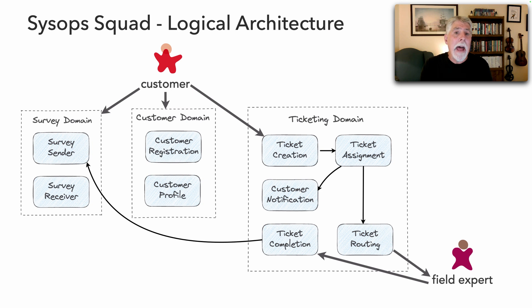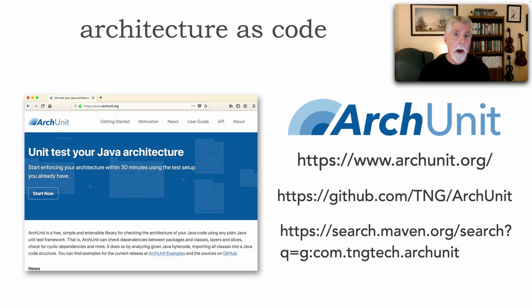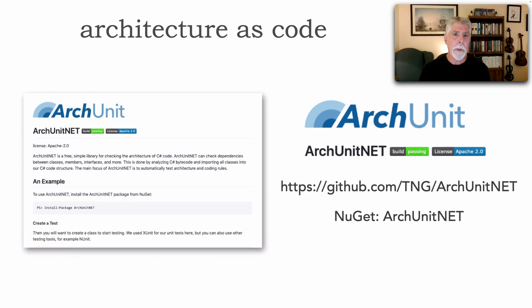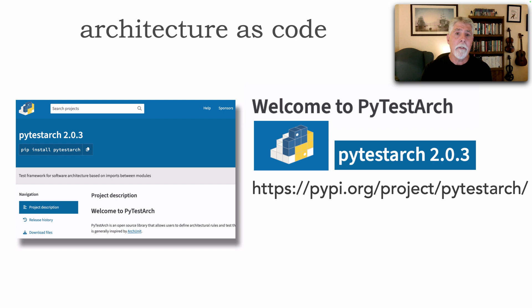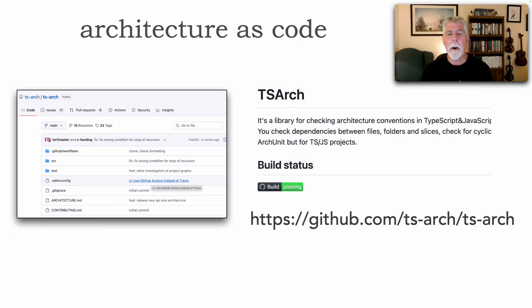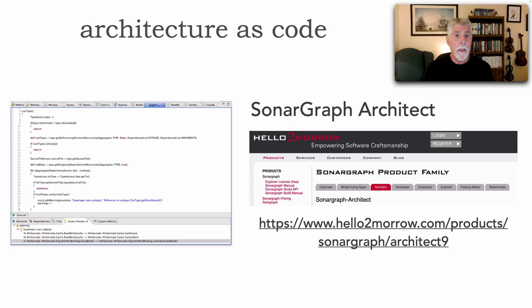When we talk about architecture as code, let me show you one possible definition and a couple of tools we can actually use. The first couple are free. The first is ArcUnit in the Java ecosystem, which allows you to represent your architecture as executable code. In the .NET platform we have ArcUnit.NET and also NetArk Test. In Python we have PyTestArk — not to be confused with PyArk Test. And also for JavaScript, TSArk. These are all free tools we could simply use. One that's not free is SonarGraph Architect, which does the same thing I'm about to show you.